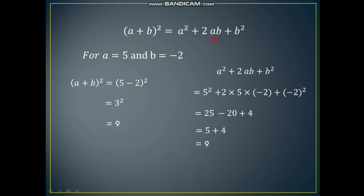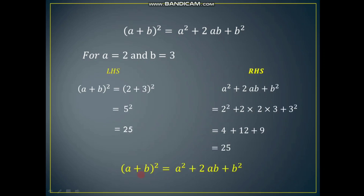So for this equation, if you take any values for the variables a and b, the equation is satisfied for those values. Such a type of equation is called an identity. The equation (a + b)² equal to a² plus 2ab plus b² is one of the identities, and it is satisfied for any values of a and b.